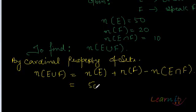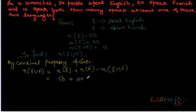So that equals to 50 plus 20 minus 10, which equals to 70 minus 10, that equals to 60. So the total number of people in the committee, 60, 60 can speak at least one of these languages.